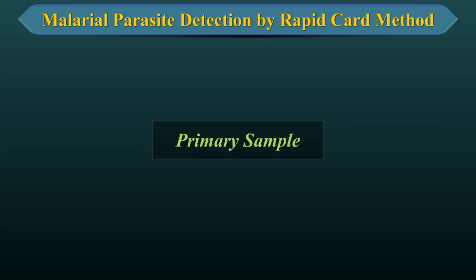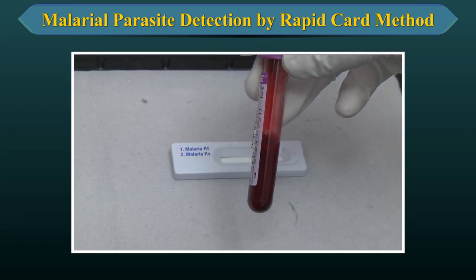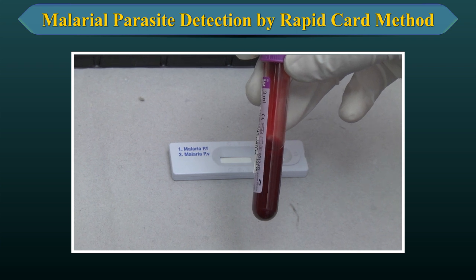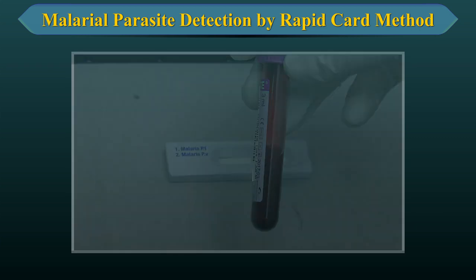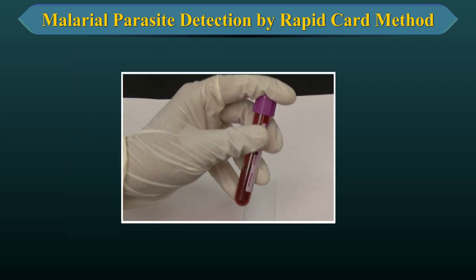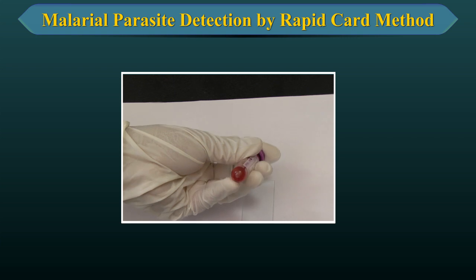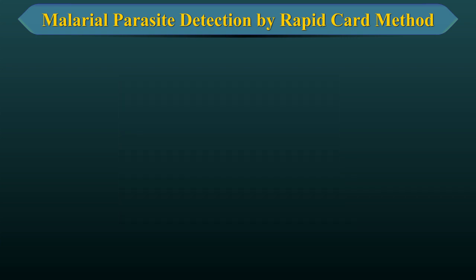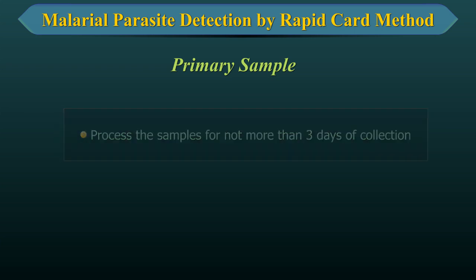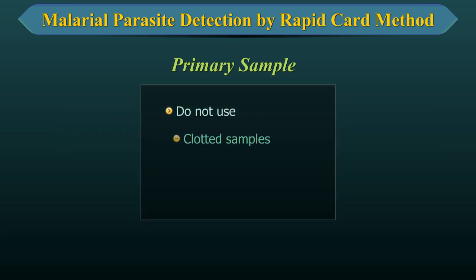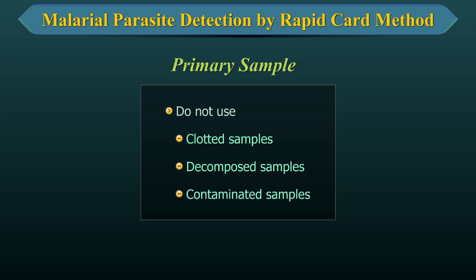Primary Sample: Collect whole blood in a clean container containing dipotassium EDTA by venipuncture for the test. Mix the specimen thoroughly but gently by 3-5 gentle inversions. Process the sample for not more than 3 days of collection. Do not use samples which are clotted, contain fibrin microclots, or are decomposed or contaminated. Reject clotted samples and samples without identification.